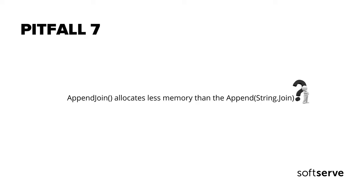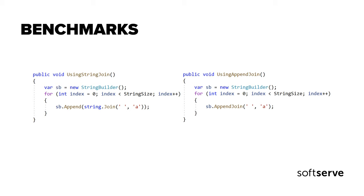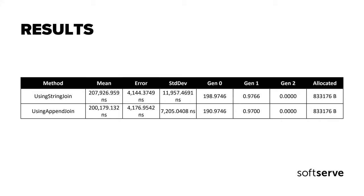Let's talk about AppendJoin. The StringBuilder AppendJoin method only exists in .NET Core, so some people may not know about it. You should use it instead of String.Join. We compare two methods: one using String.Join and one using AppendJoin to append characters to a StringBuilder object. For 10,000 items, AppendJoin is quicker than String.Join, though it functions similarly — just faster.